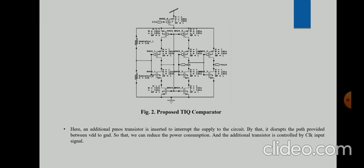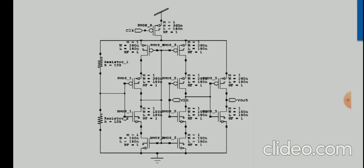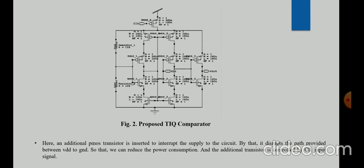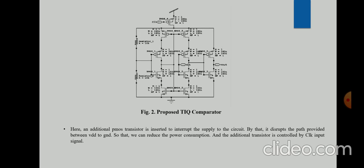This is the proposed TIQ comparator we have been discussing. We can see the existing TIQ comparator structure, but a PMOS transistor has been added at the top of the circuit which implements the power gating technique. It acts as a switch — when the circuit is switched on it consumes power, and when switched off it does not. The PMOS plays a key role like a switch, increasing the effective use of power and decreasing power dispersion in the overall circuit.